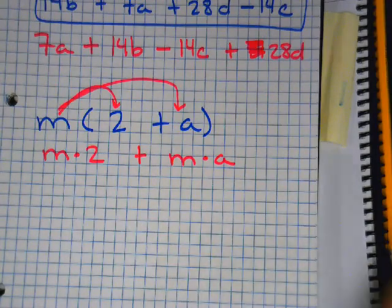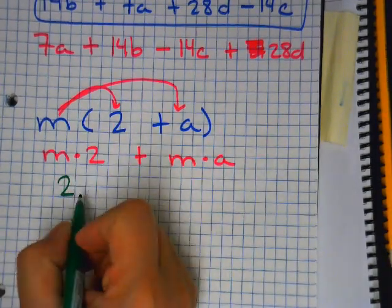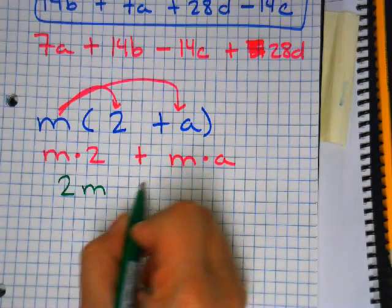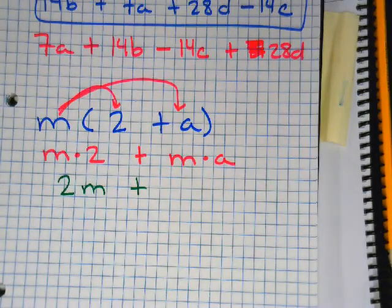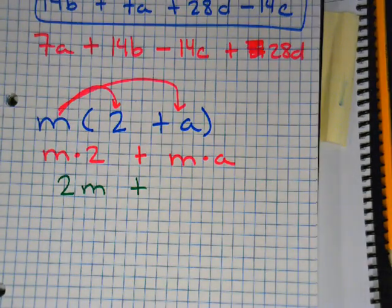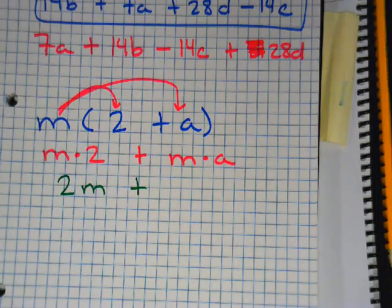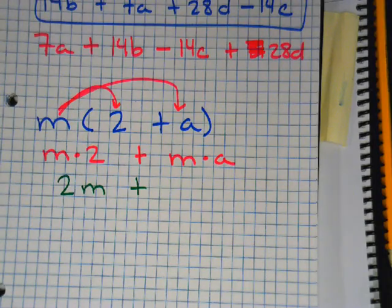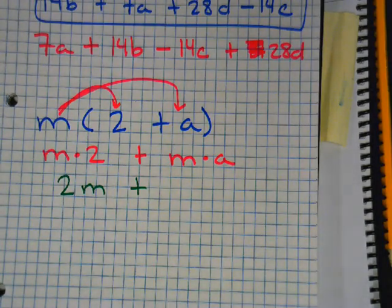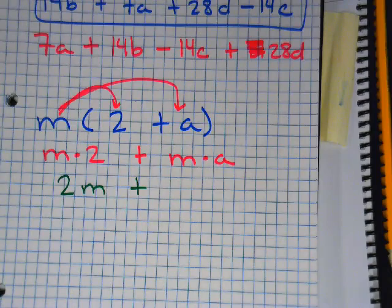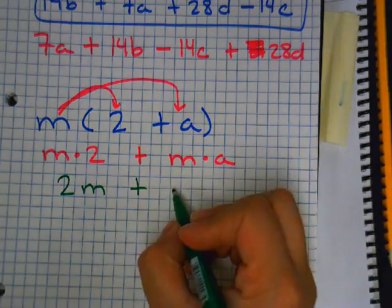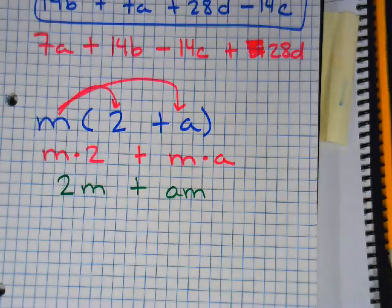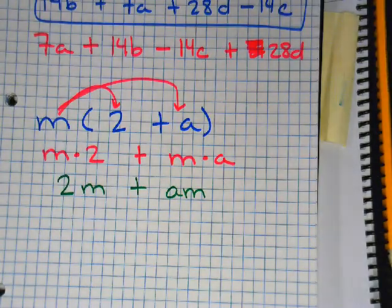What is M times 2? 2M. Very good. We always like to put the number in the front. Plus, what's M times A? MA. Yes and no. You would just push them together, right? But remember the alphabetical order part? AM. Now Adrian, as 7th graders, am I okay with you writing MA pushed together? Yes. In high school, they want you to put it in alphabetical order.